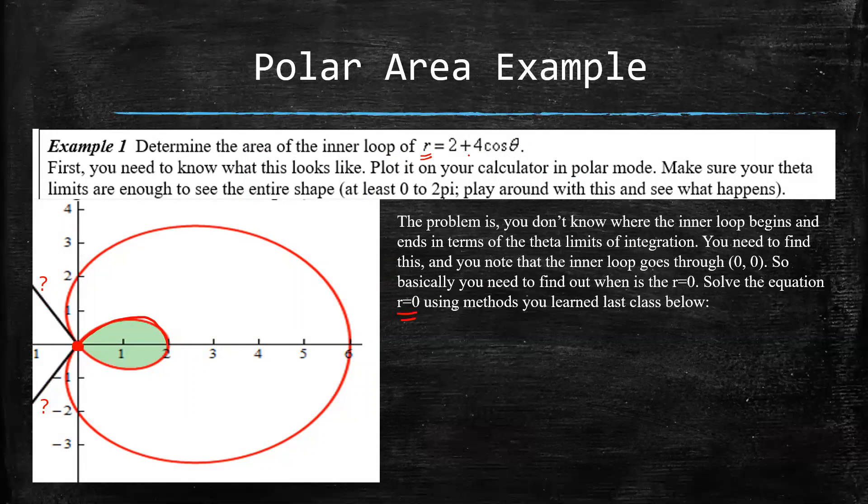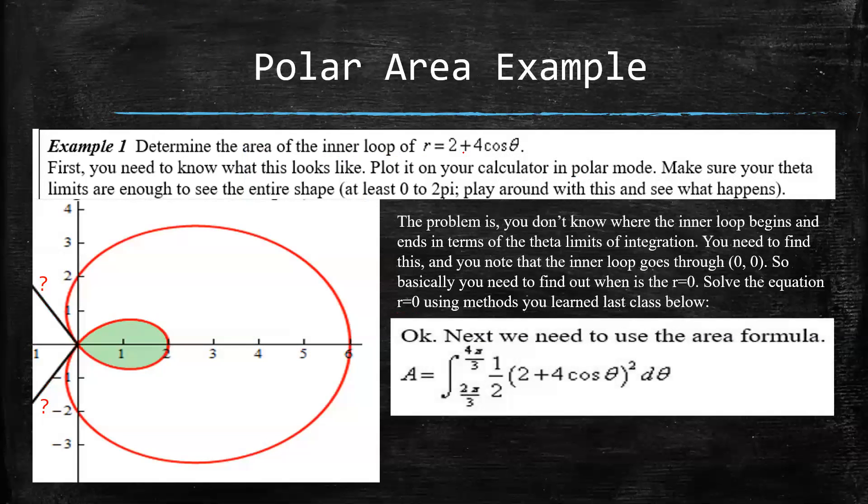All right, pause the video if you haven't done so already. So when you solve, you should end up with negative 2 equals 4 cosine theta, which means that your cosine theta equals negative 2 over 4. So negative a half.